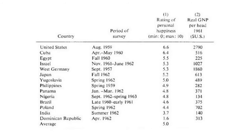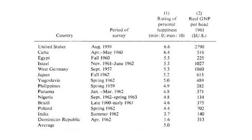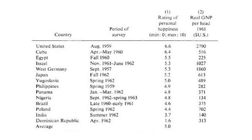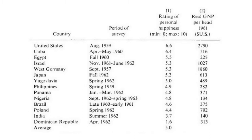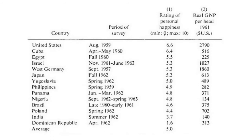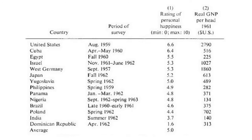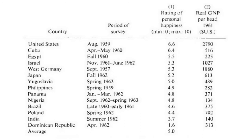Here is a table where you have the correlation between income and happiness between countries — again from Easterlin, 'Economic Growth,' page 105. On the right side you have real GNP per head, and then you have personal happiness on a scale from 0 to a maximum of 10. And you can see that these do not correlate at all.